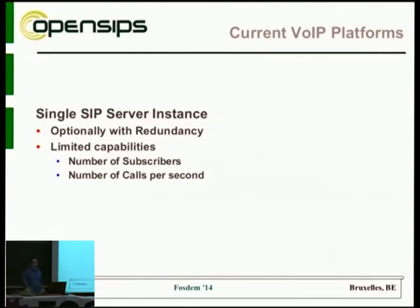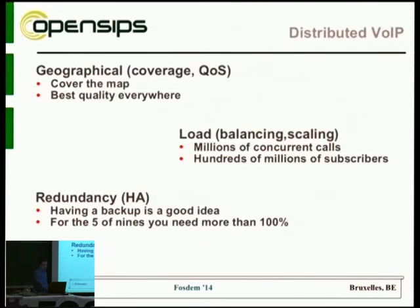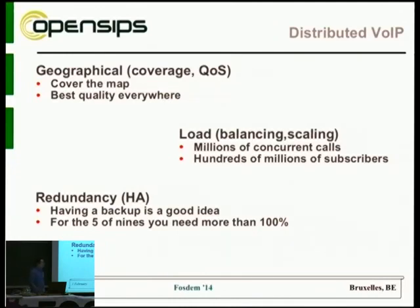Even if you're running high-performance software like OpenSIPS, there are still reasons why you wouldn't want to put that many things on a single box. First, you wouldn't want a single box for geographical reasons — your users are spread across the globe, not all from the same country, and you want to cover the entire map to provide better voice quality to everybody, so you don't stream media from Europe to Asia or to the United States. Furthermore, even with high-performing software, you'd prefer to balance traffic across multiple machines to better resist bursts of traffic.